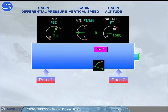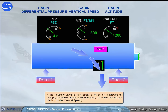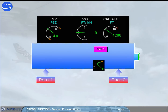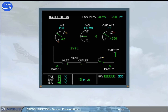If the outflow valve is fully open, a lot of air is allowed to escape. The cabin pressure will decrease, the cabin altitude will climb — positive vertical speed. The crew can monitor all cabin pressure functions on the ECAM cabin pressure page.